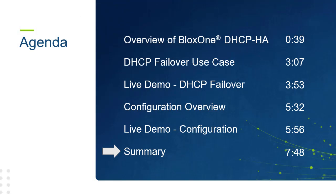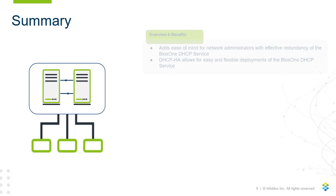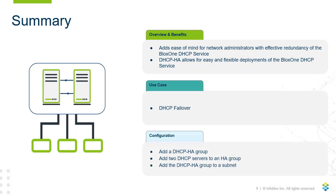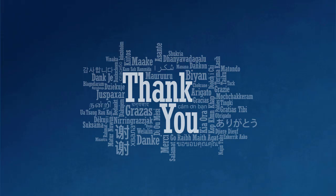Now let's review what we covered in this video. First, we looked at an overview of the Blox 1 DHCP High Availability feature and its benefits. Then we covered a use case for this feature. Finally, we covered the configuration of this feature. Thank you for your time viewing this video. All documentation regarding the Blox 1 DHCP High Availability feature is located on the Infoblox documentation website at docs.infoblox.com. If you have any other concerns, questions, or comments, you can find myself or other Infoblox experts at the Infoblox Community website at community.infoblox.com. Thanks again, and have a great day.